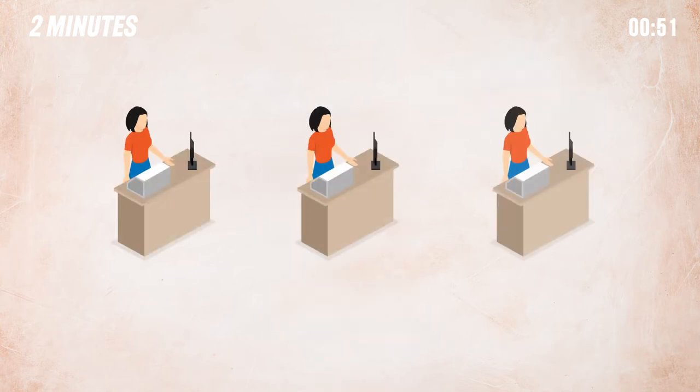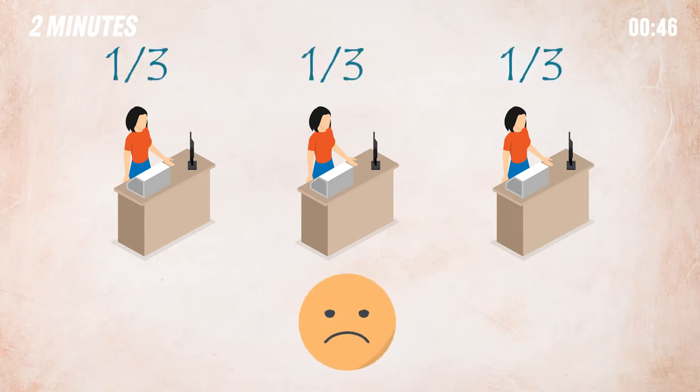Assuming that there are three checkout counters, the probability that the line of one counter moving the fastest is one third, leaving a two thirds chance that some other line will move faster than the one you're in. On the other hand, there is a one third chance that the line you stand in will move faster.